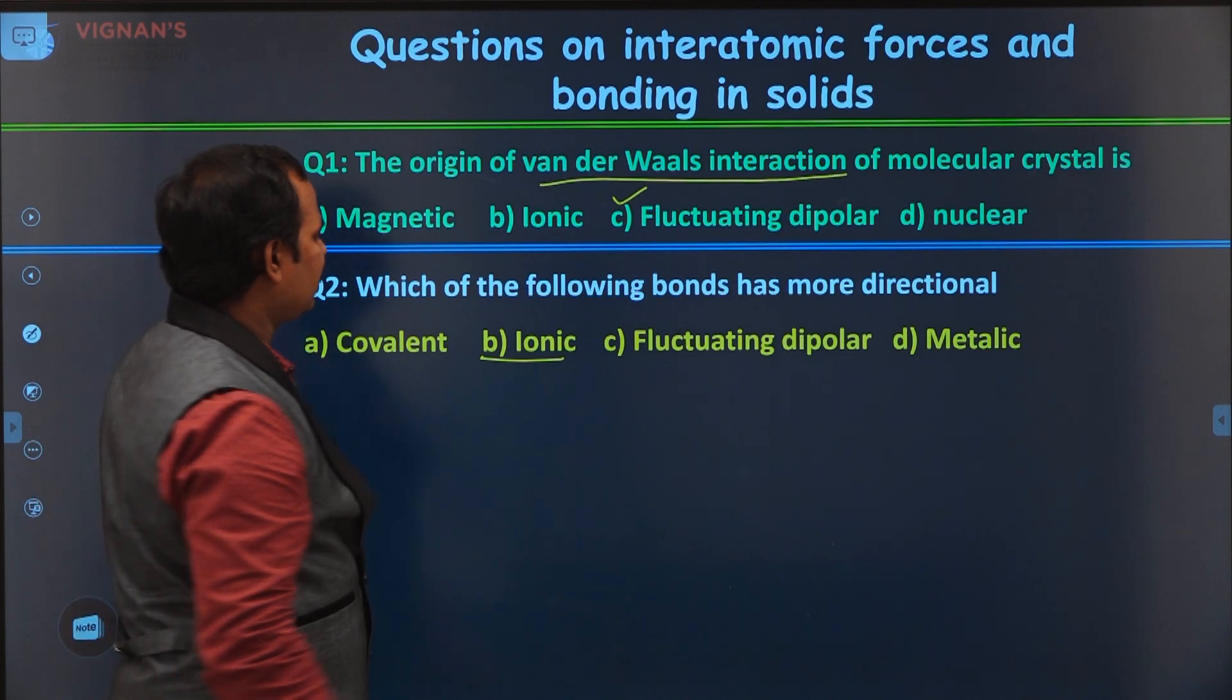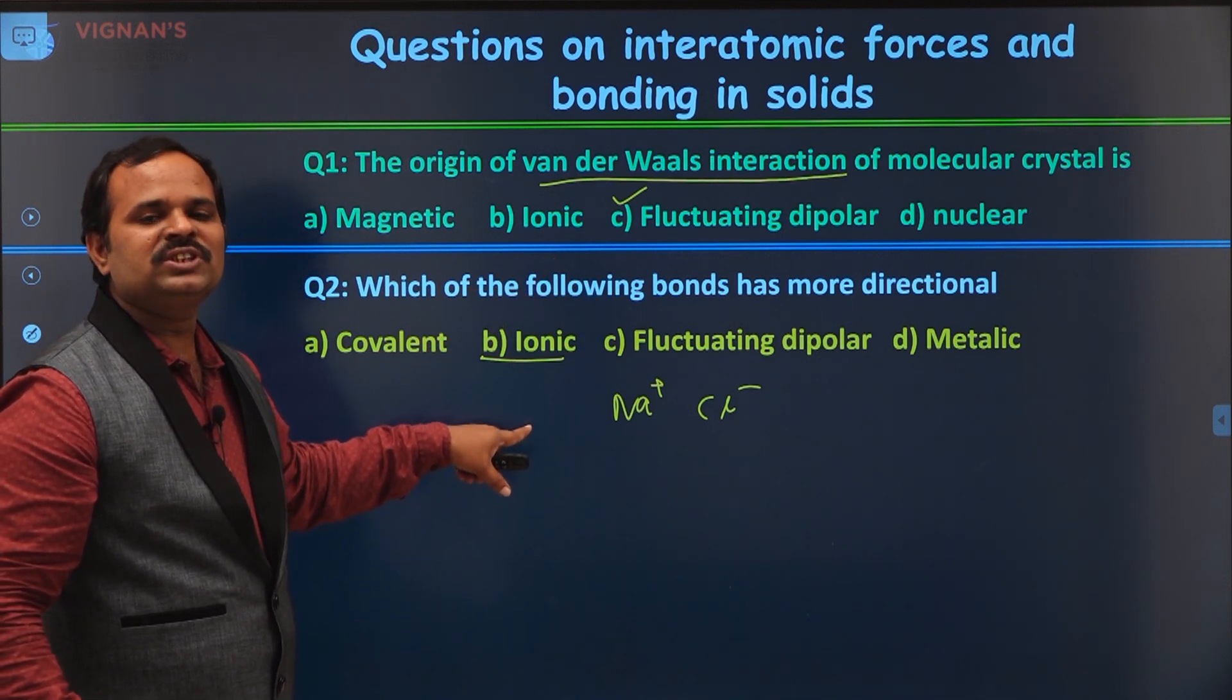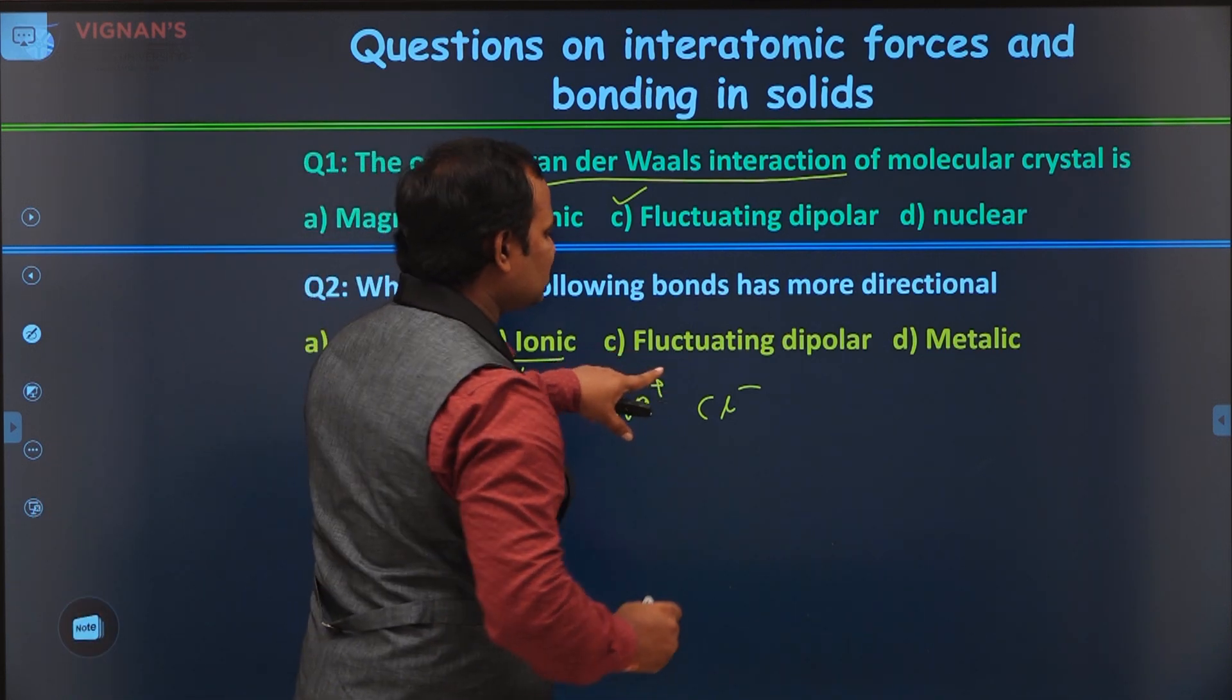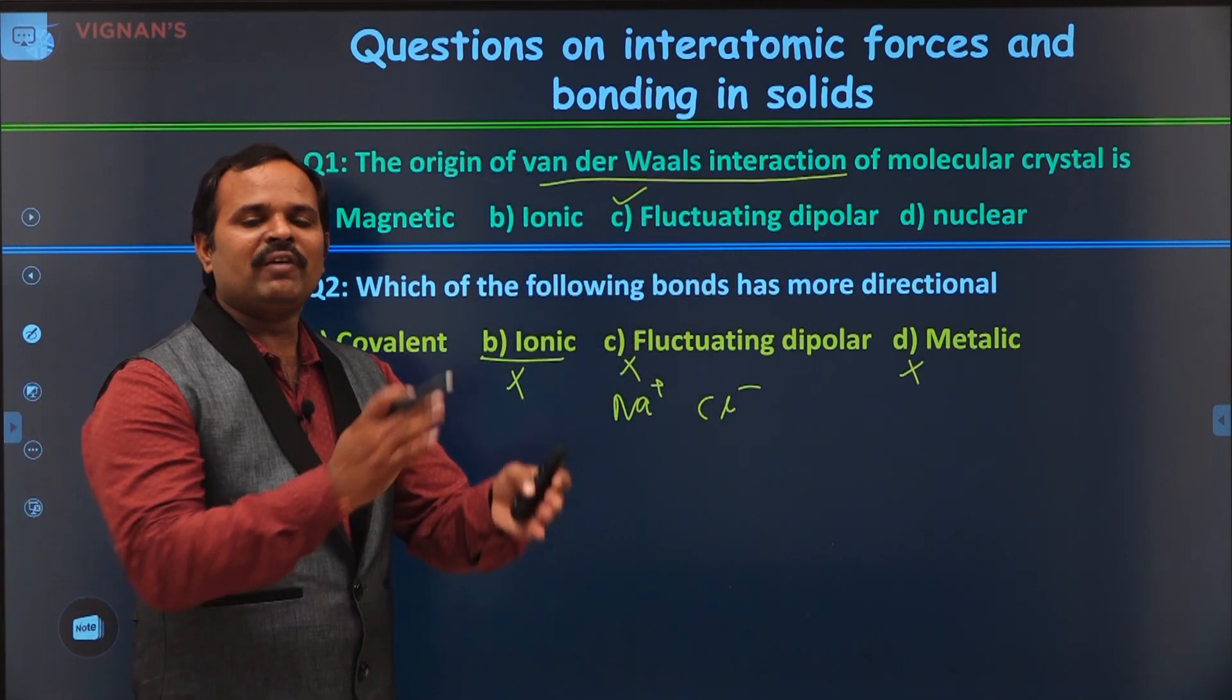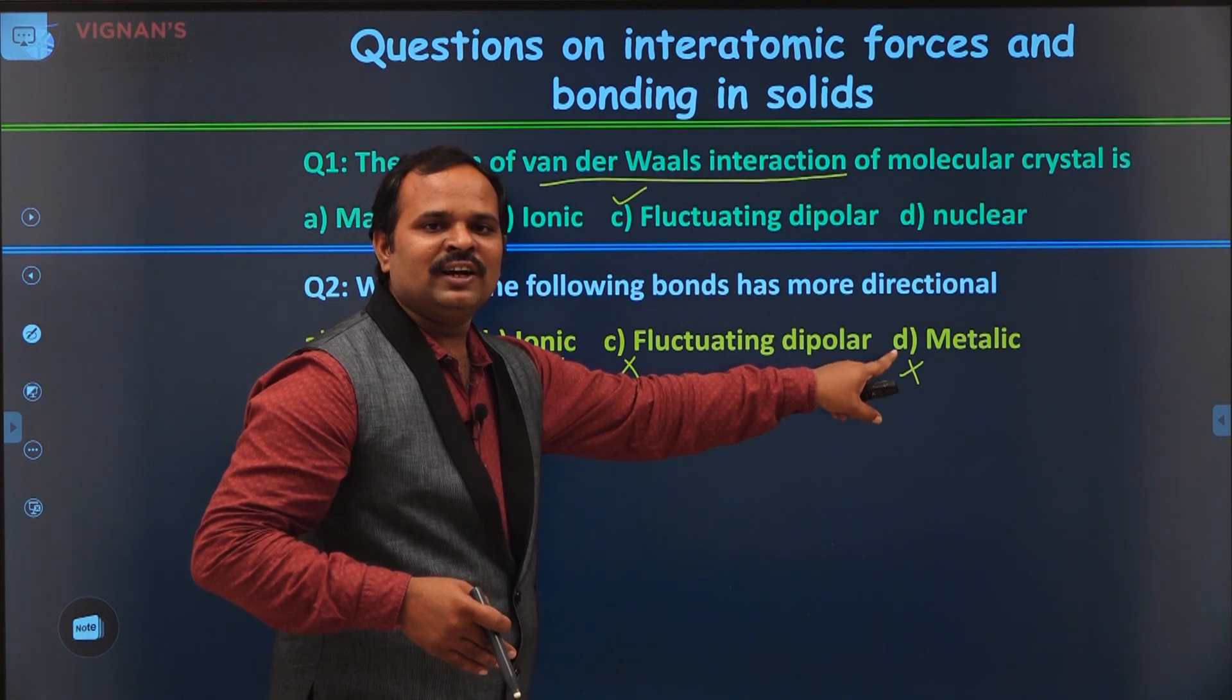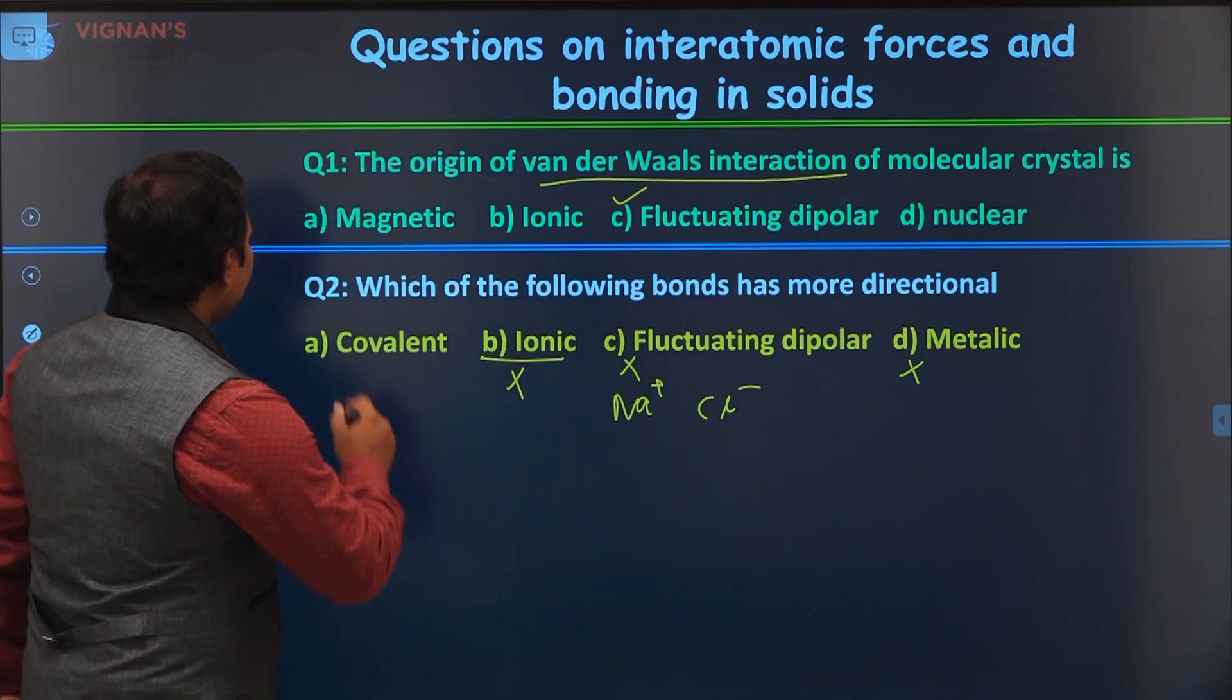For example, if you take sodium plus and chlorine minus, though it's a positive charge, this positive charge can attract chlorine or negative charge in any direction. Force is inversely proportional to R square and this force is equal in all directions. So it is not at all directional. Fluctuating dipolar is also not directional, and metallic is not at all directional. In metal, we have a large number of electrons. These electrons will be shared to all the ions in the metal. So the bonding is similar to covalent bonding, but the electrons are delocalized completely. They won't be fixed between two atoms. They will be delocalized throughout the metal. So this is also non-directional. Only the covalent bond is directional.